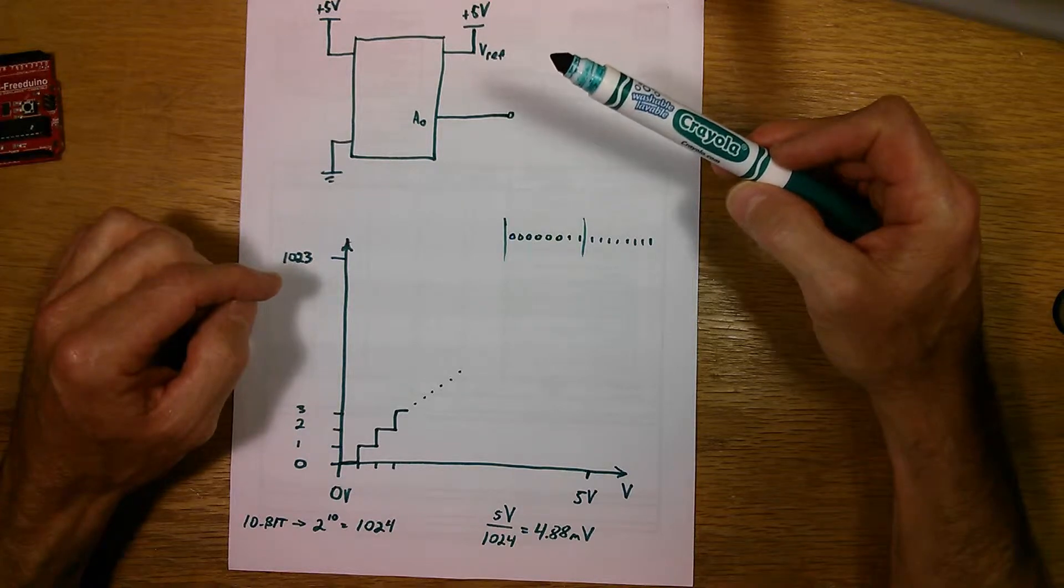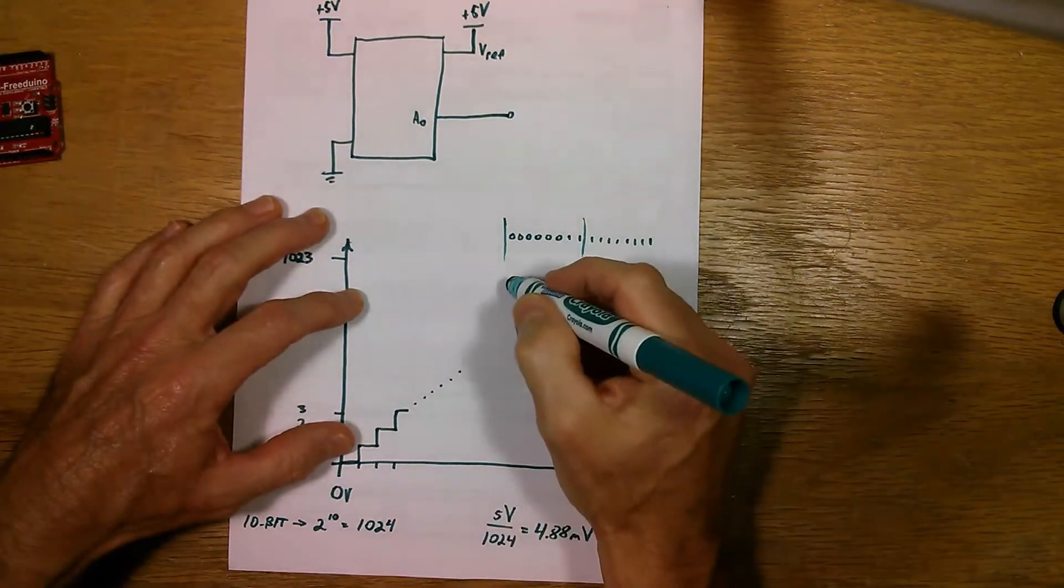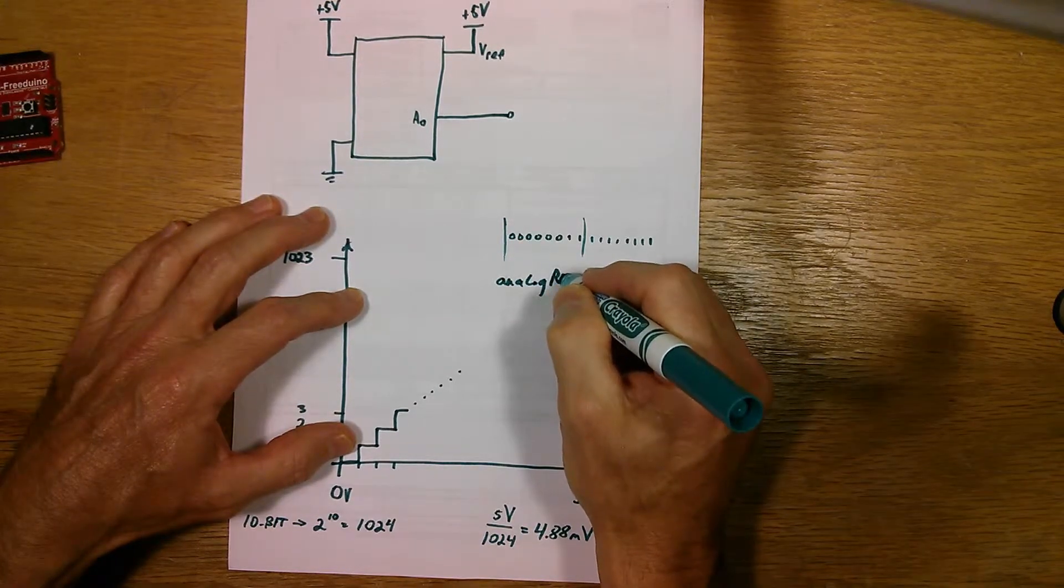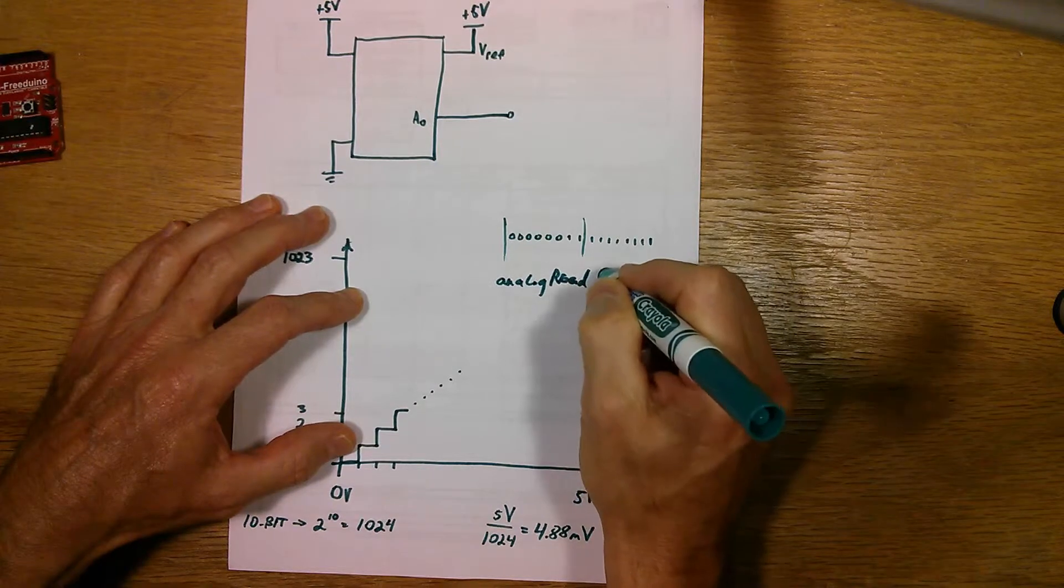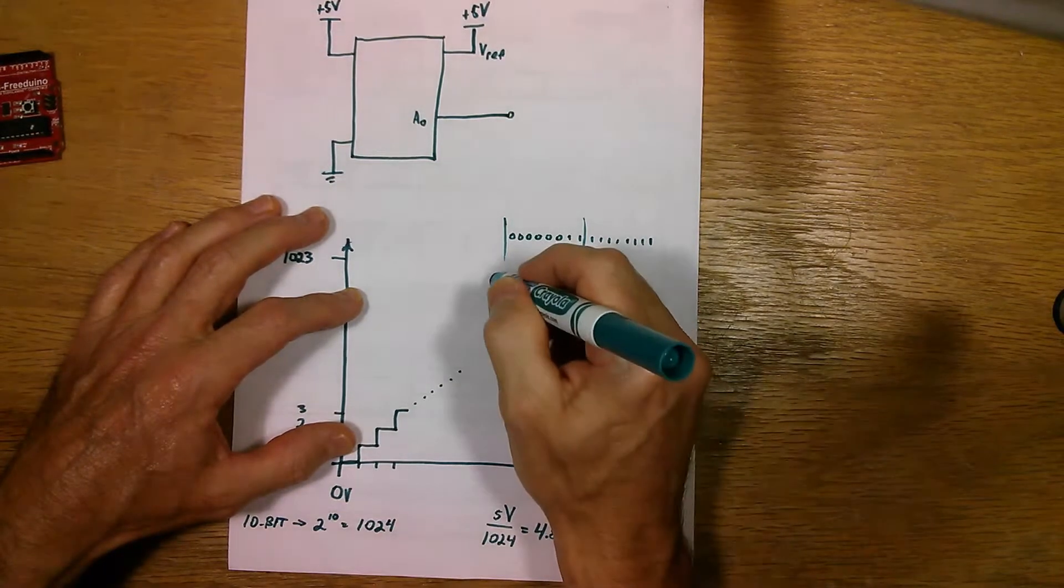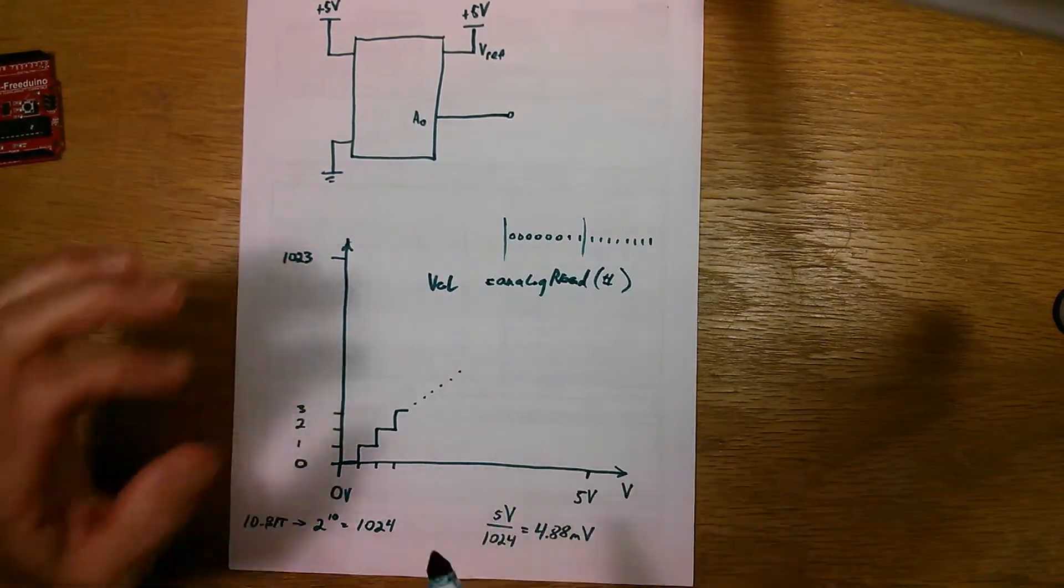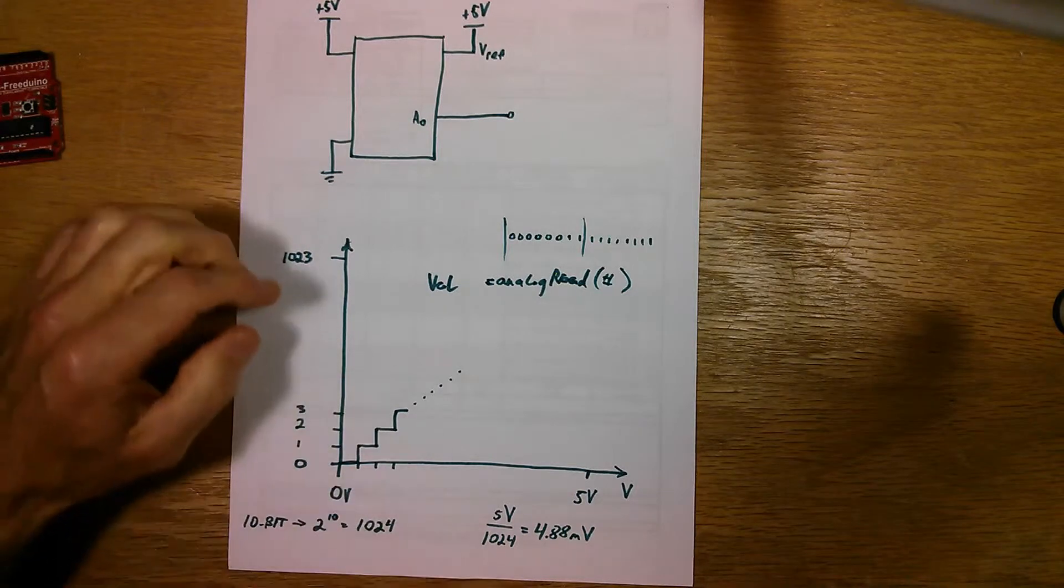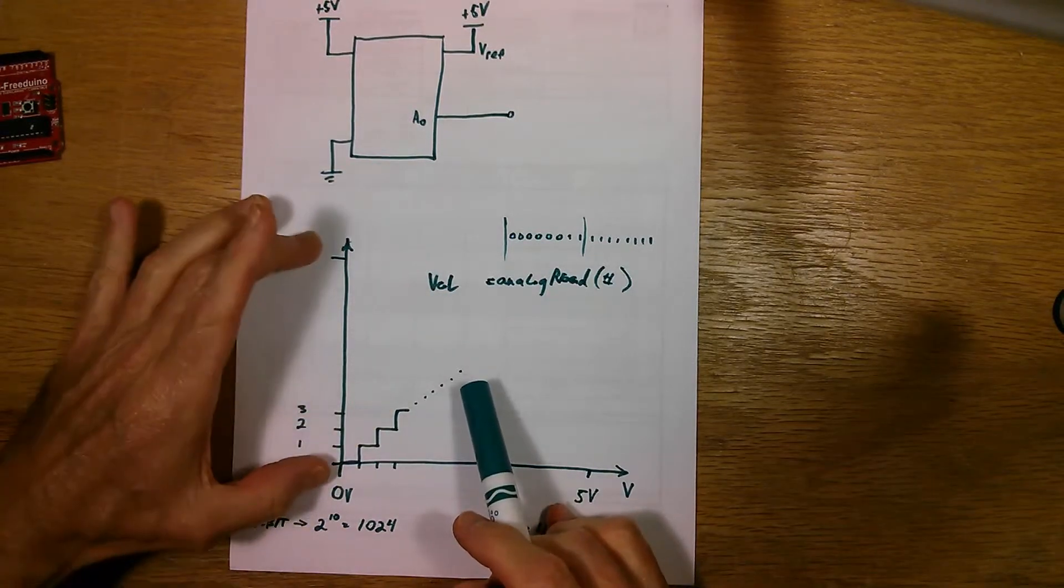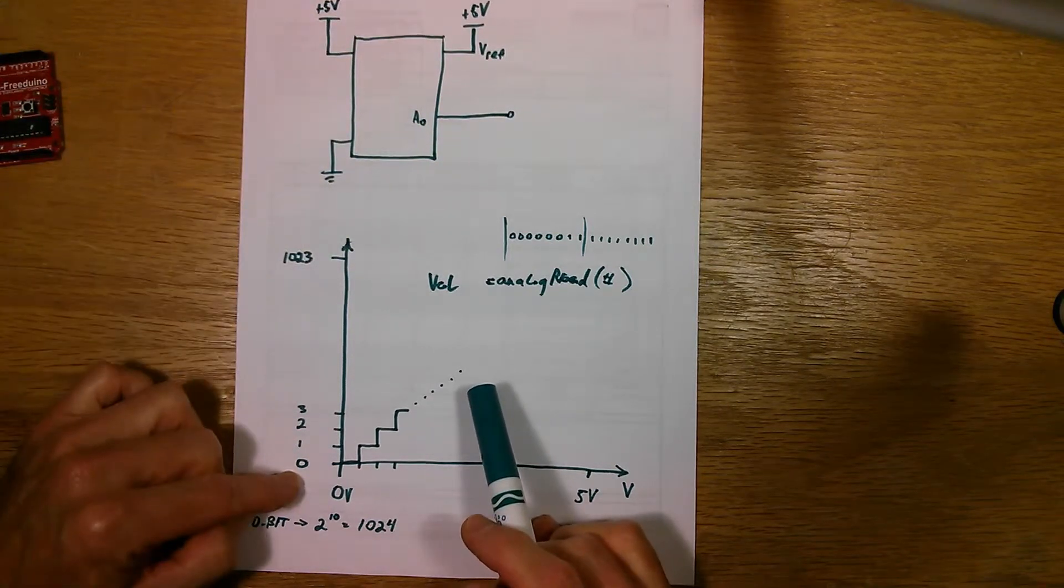The Arduino function in the C code that does this conversion for you is called analog read. And in brackets here, you put the pin number. And what it does is you have to make it equal to some variable, val or something like that, equals analog read and the pin number. And what it does is it will do the conversion on whatever pin number that you've selected and give back a number that represents the range that the input pin is between zero and five volts. So it'll be between zero and 1023.